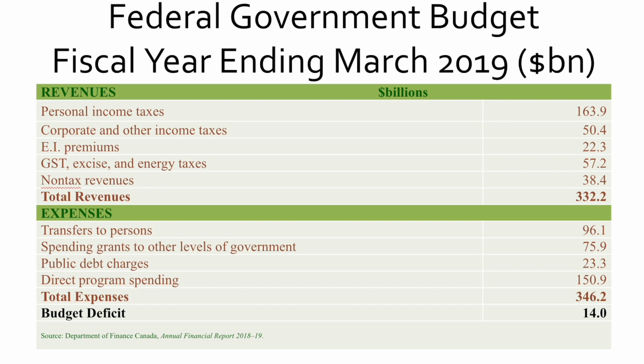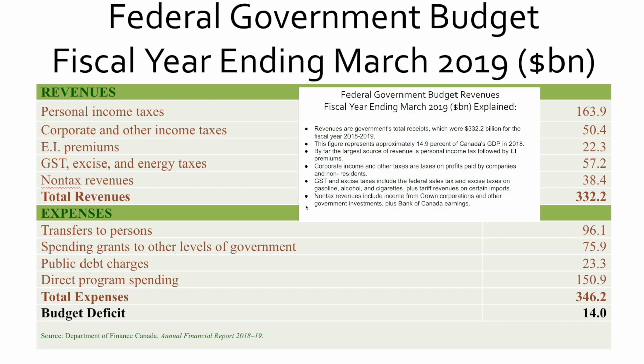Here's an example of the 2019 budget, a succinct example you'll also find in your textbook. On the revenue side: personal income taxes brought in $164 billion, corporate and other income taxes $50.4 billion, EI premiums $22 billion, GST, excise and energy taxes $57 billion, and non-tax revenues $38 billion — for total revenues of $332 billion.